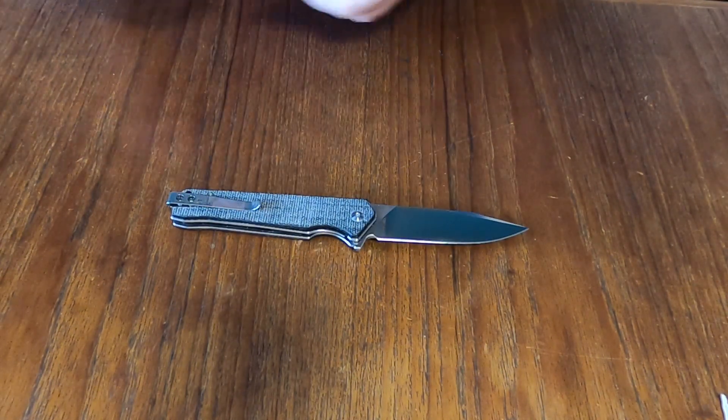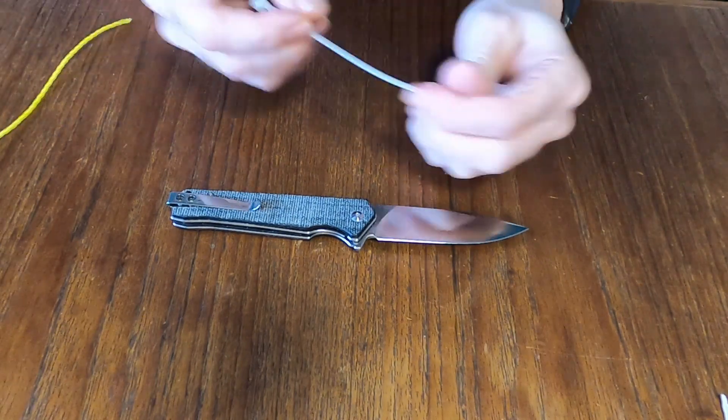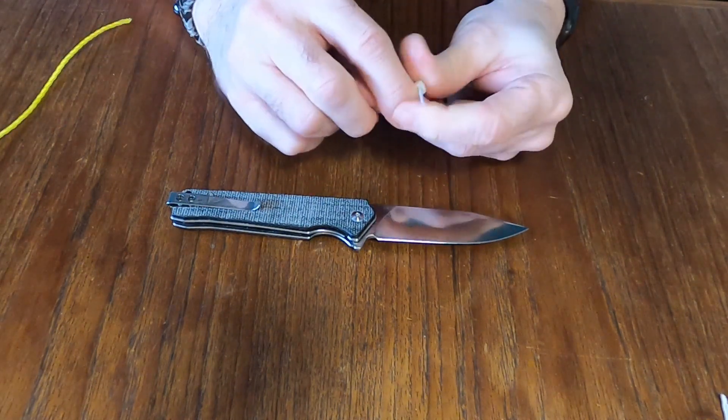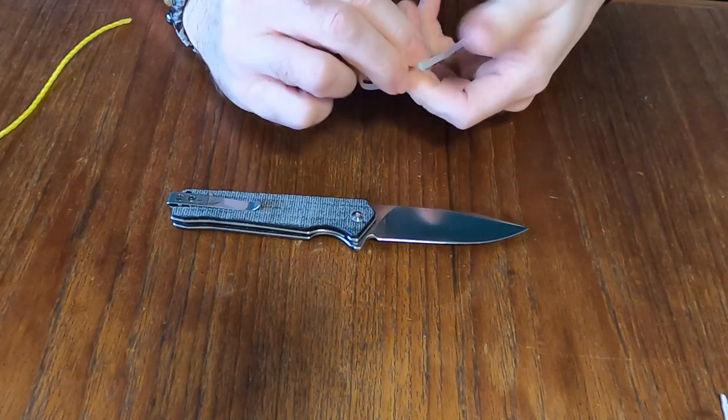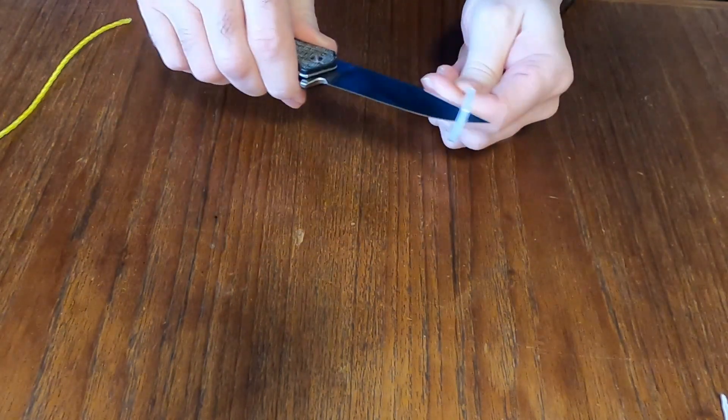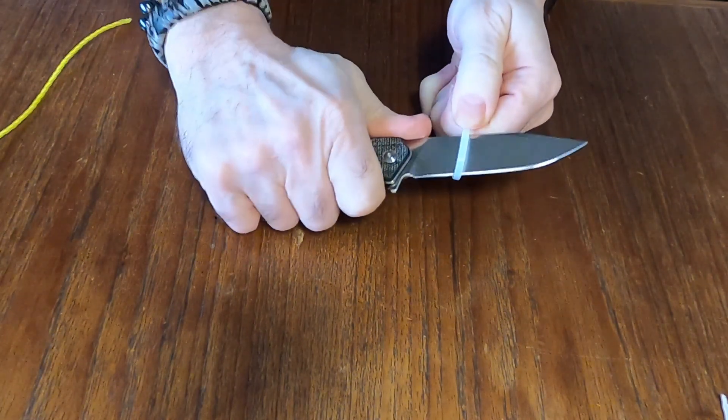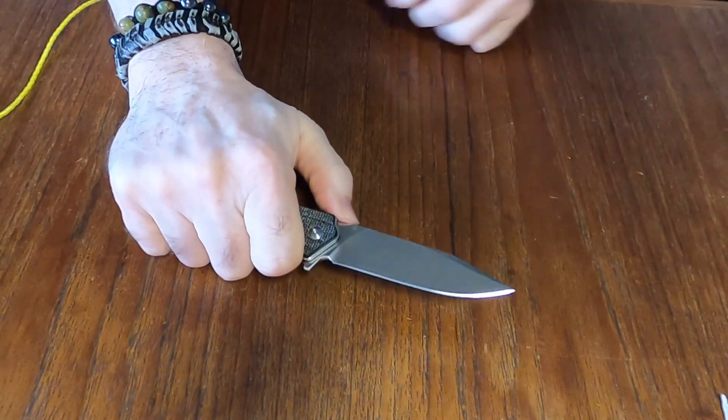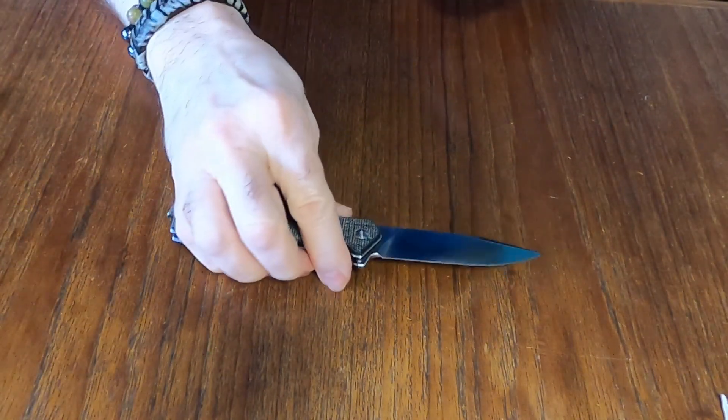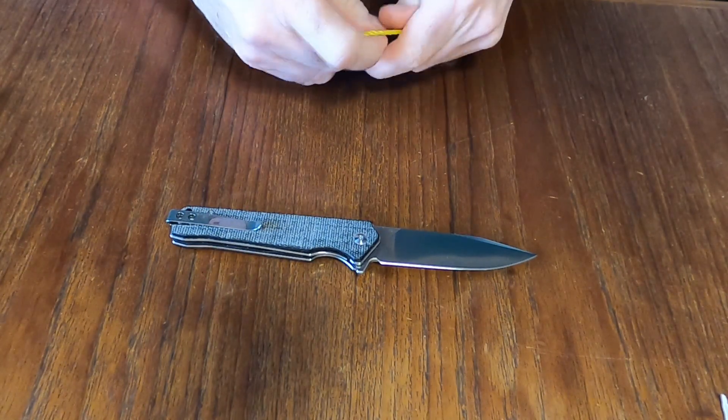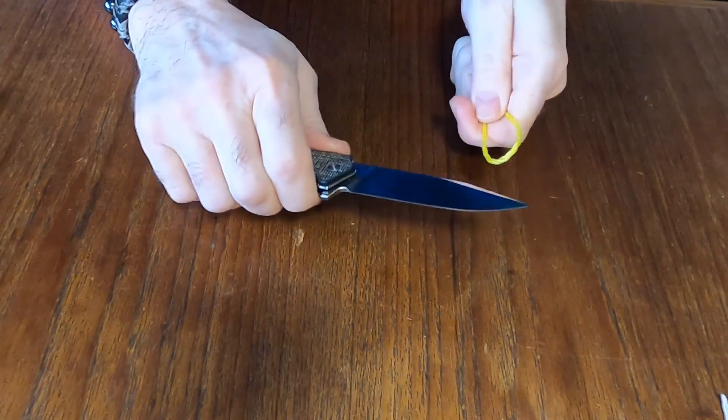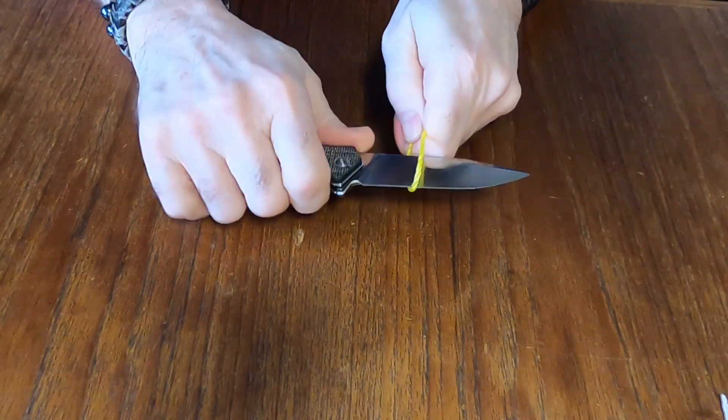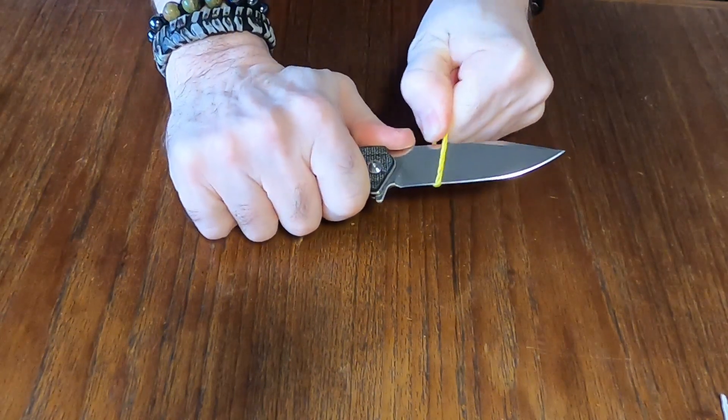And let's see what we got here, we'll grab the old zip tie, see how it works on that. That's where your jimping comes in nice, you get the good purchase with your thumb for pushing.